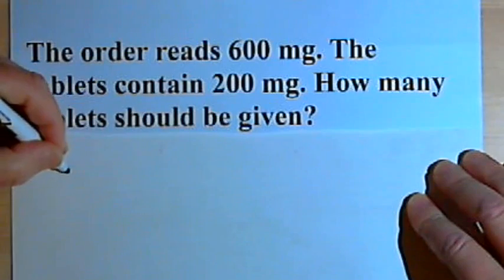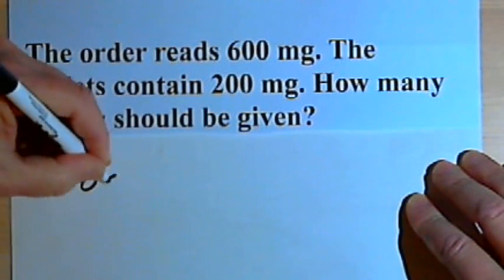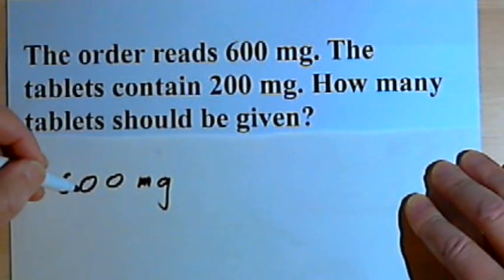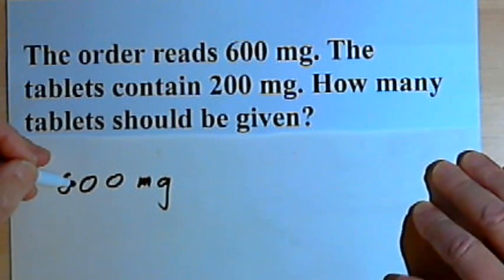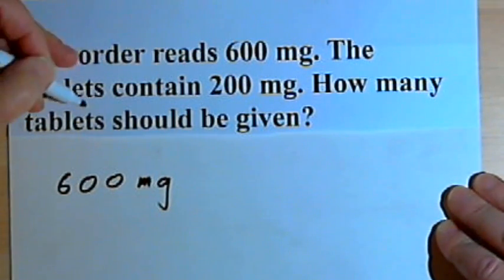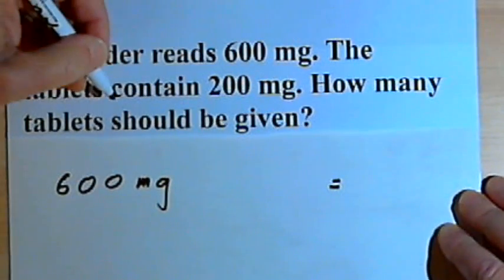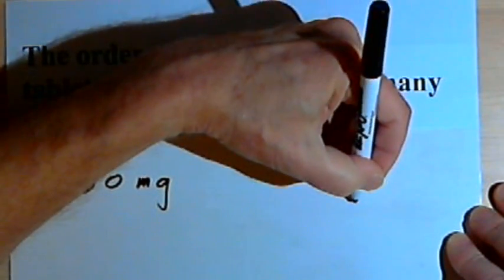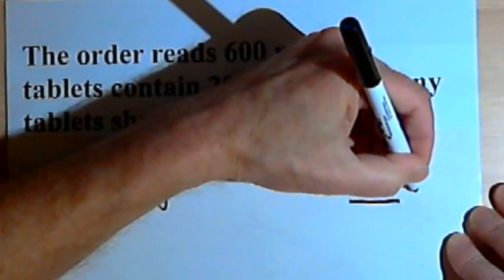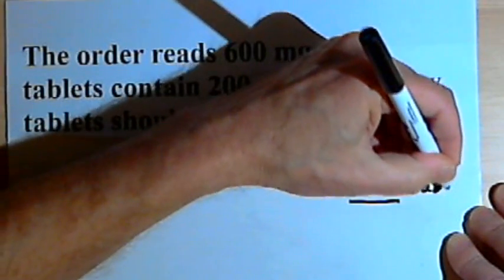We're going to start out with the order. That's 600 milligrams. That's going to be the beginning of the left side of an equation. The right side of the equation is going to tell me how many tablets should be given. So I'm going to leave a space for the number of tablets, and I'll just write the unit, which is tablets.